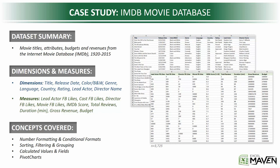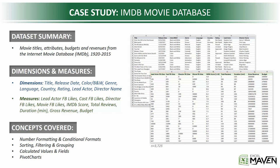The measures, which are the quantitative fields or the metrics that we actually care about, include Facebook likes for the lead actor, the total cast, the director, and the movie as a whole, plus the IMDB score on a scale of 1 to 10, the total number of reviews, the film duration in minutes, gross revenue, and budget.